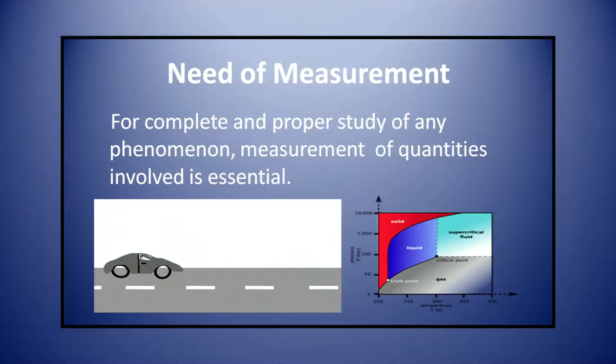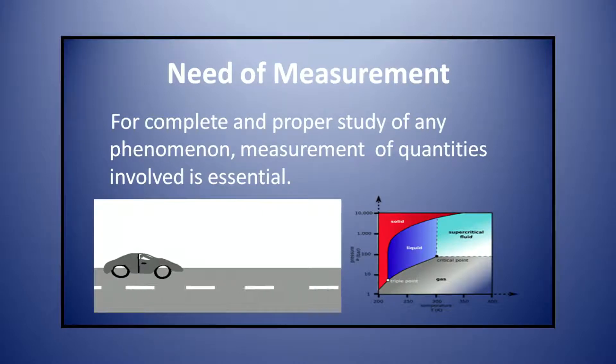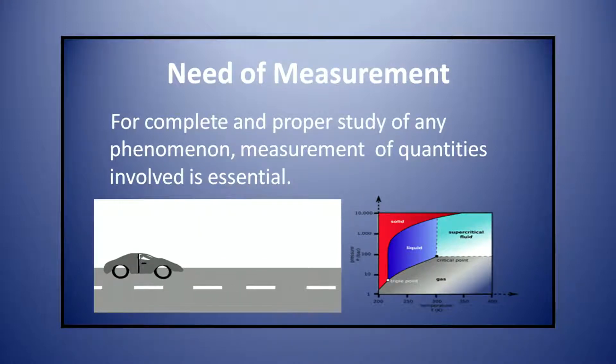This explains the need for measurement. You can see that a car is moving on the road. If you want to express its velocity, then you have to measure how much distance it has covered in how much time. So you need measurement for that.